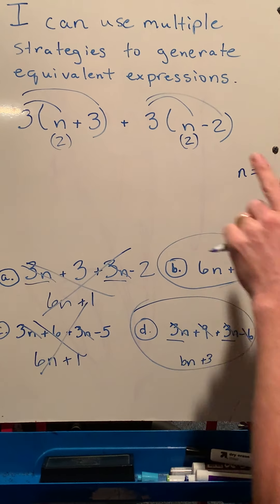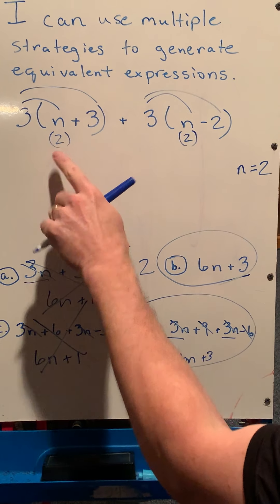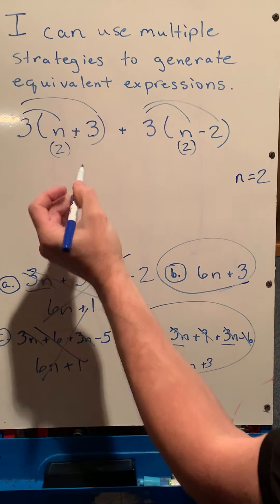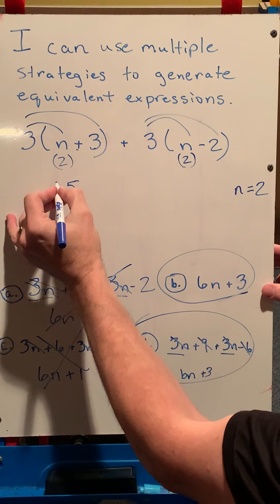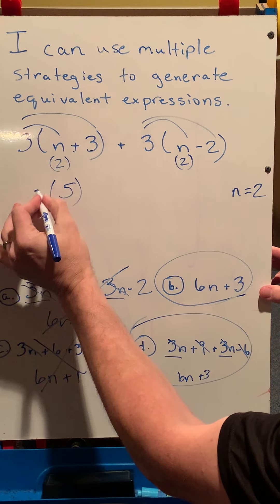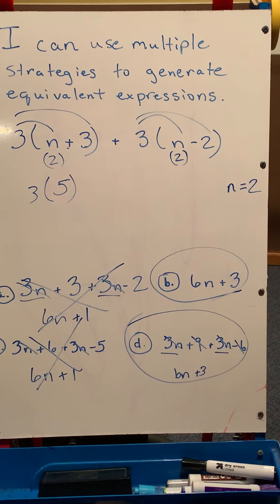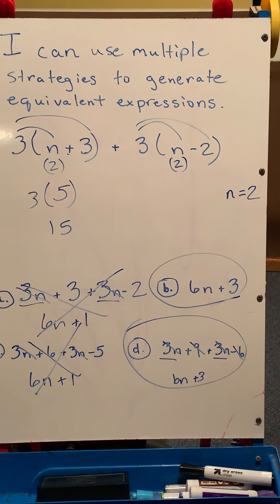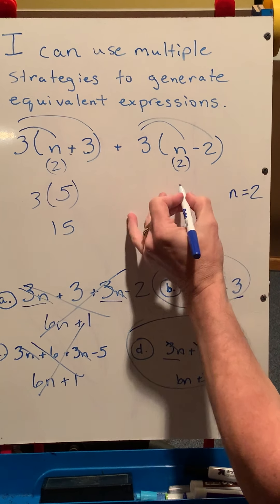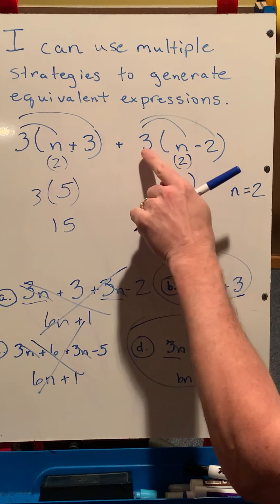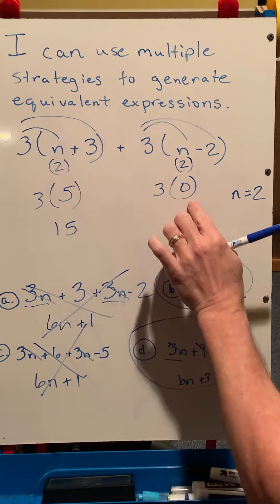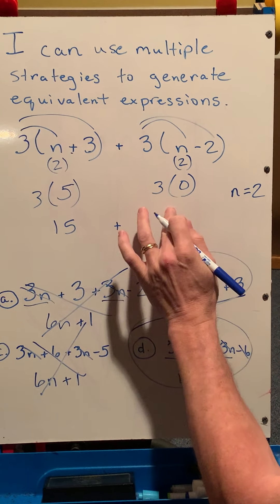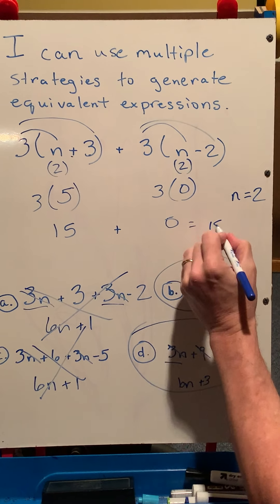So in this, I'm going to do parentheses first. So let's start over on this side. If n is 2, 2 plus 3 is 5. So if I rewrite this, it becomes 3 times 5, which is 15. And if I plug it in over here as well, 2 minus 2, this becomes a 0. And 3 times 0 is 0. So 15 plus 0 equals 15.